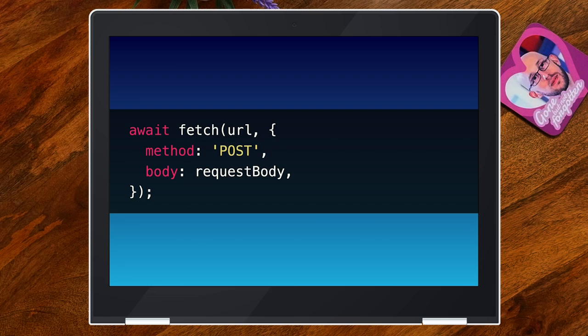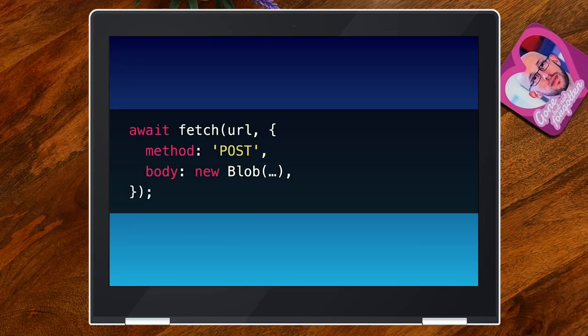This is the fetch API. You've seen it before. This is making a request with a request body — a POST request. The body can be a number of different formats. It can be a string, which means it can be sent as text. It will encode it to UTF-8 implicitly and then send those bytes, and it will add the content type for you as well, including the UTF-8 part. Same with a blob — it'll send that as binary and take the content type from the blob itself. A Uint8Array will be sent as application/octet-stream.